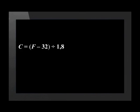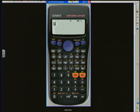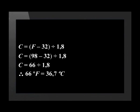As an example, let's convert 98 degrees Fahrenheit into degrees Celsius. We start off with our formula. Next, we replace the Fahrenheit temperature with the number 98. We simplify this to be 66 divided by 1.8. Let's use a calculator to solve this. 66 divided by 1.8 equals 36.6 recurring. Therefore, 98 degrees Fahrenheit is equal to 36.7 degrees Celsius.